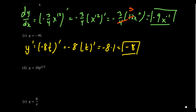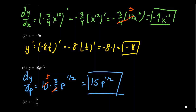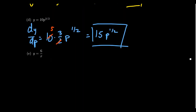We can start skipping steps since the constant multiple just factors out. For y equals 10 times p to the three-halves, dy/dp equals 10 times three-halves p to the one-half power — where one-half comes from three-halves minus 1. Since 2 goes into 10 five times and 5 times 3 is 15, the derivative is 15 times p to the one-half power.